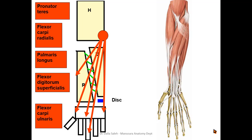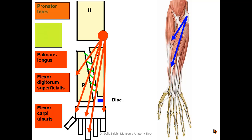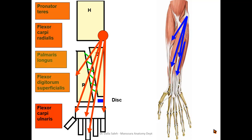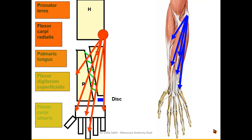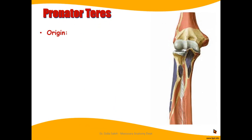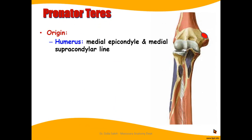Note that their origins arise from the common flexor origin while their insertions differ. If we look at this diagram on the right side of the screen — looking at the medial epicondyle — this is the common flexor origin. This muscle will be the pronator teres, the flexor carpi radialis, and the palmaris longus. On a deeper plane lies the flexor digitorum superficialis, and the one on the medial side will be the flexor carpi ulnaris.